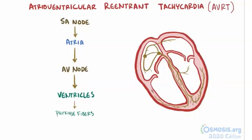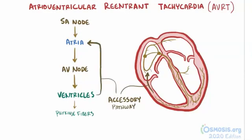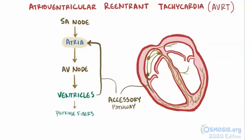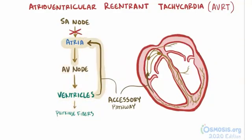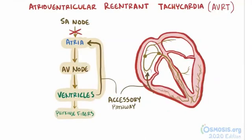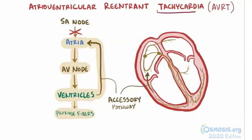With an atrioventricular re-entrant tachycardia, or AVRT, the electrical signal actually uses a separate accessory pathway to get back up from the ventricles to the atria, causing the atria to contract before the SA node sends out another signal. The signal then moves back down the AV node to the ventricles and the Purkinje fibers and contracts the ventricles, as well as goes back up that accessory pathway. And then the cycle repeats, which is why AVRT can result in rates as high as 200 to 300 beats per minute.